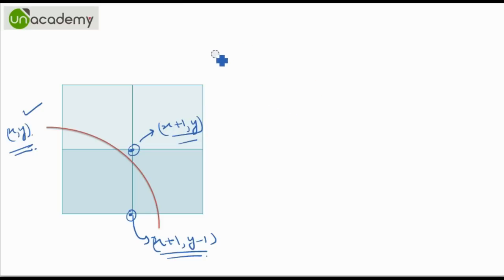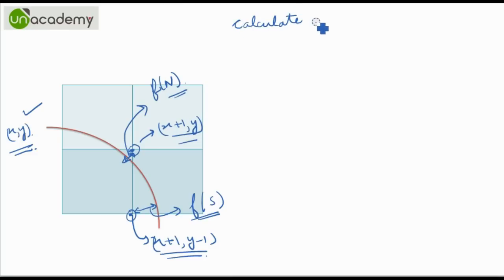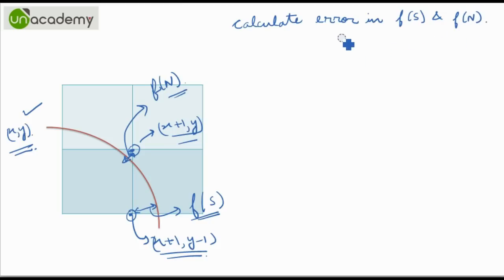So what the Bresenham algorithm will do? It will calculate the distance from the curve — f of N and f of S — and it will calculate the error between f of S and f of N, and whichever gives the less error, that will be selected. Simple enough.